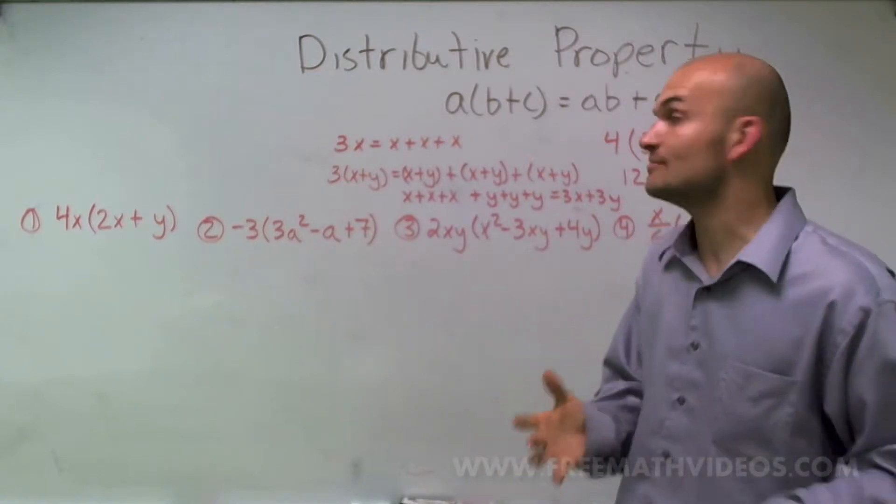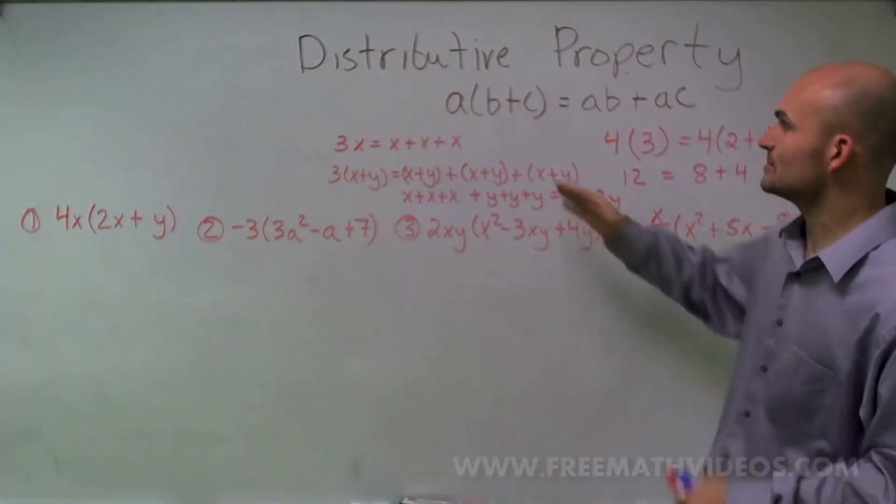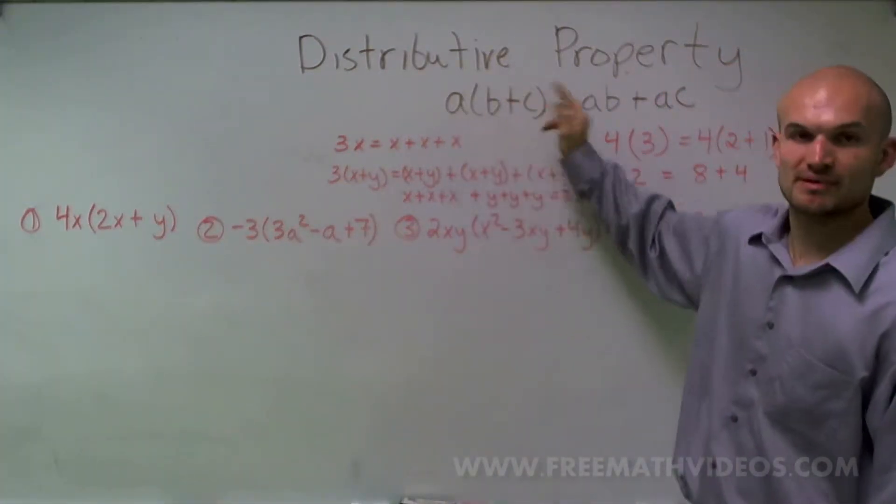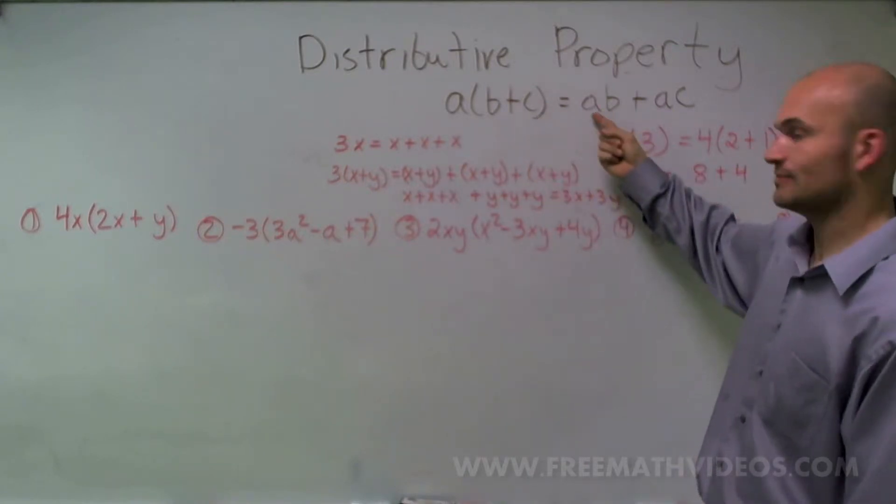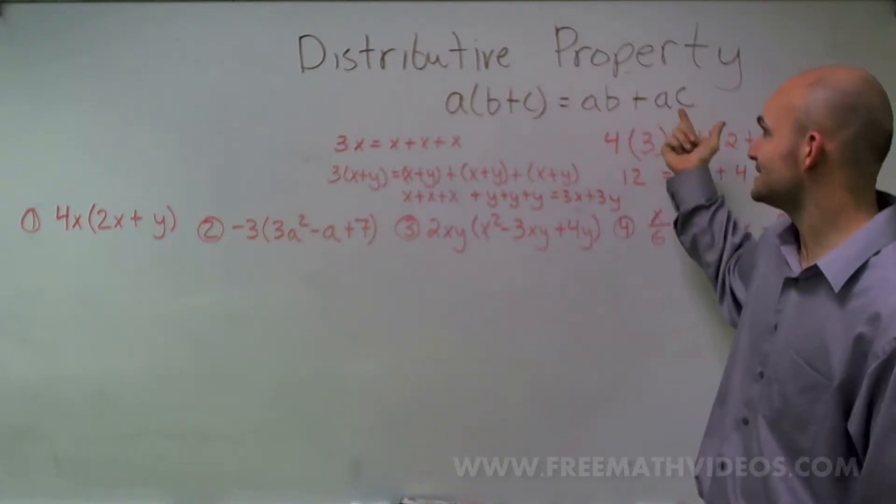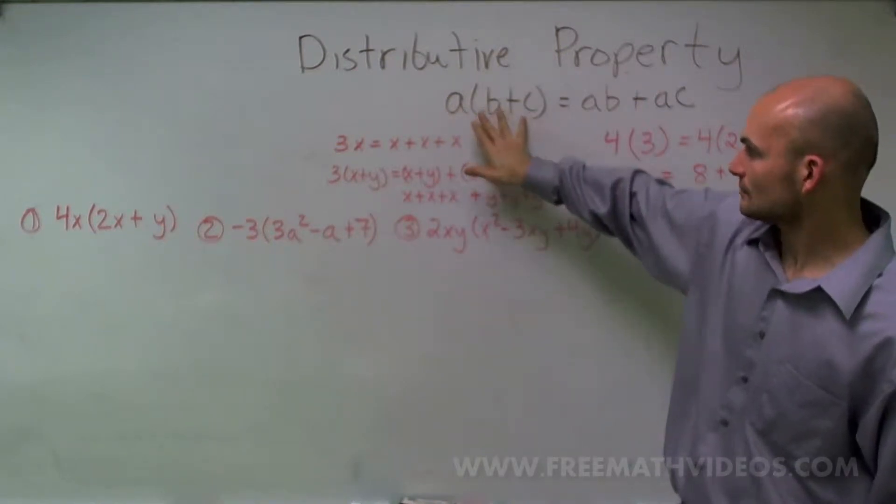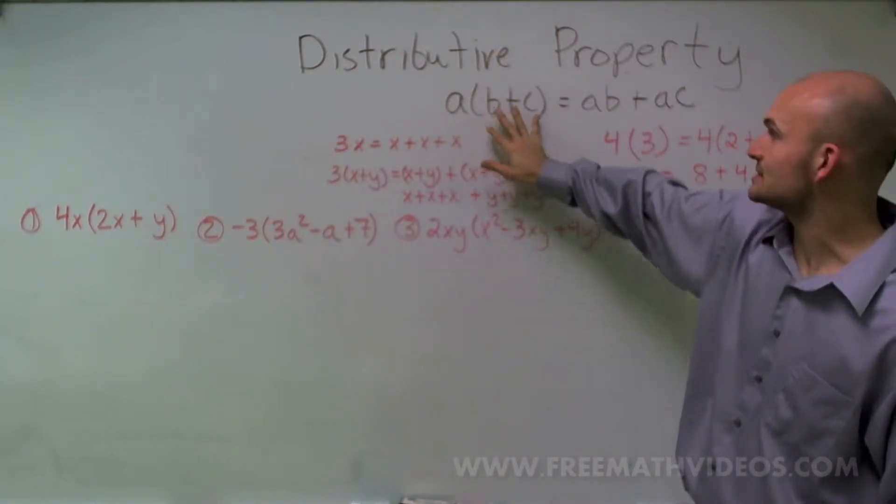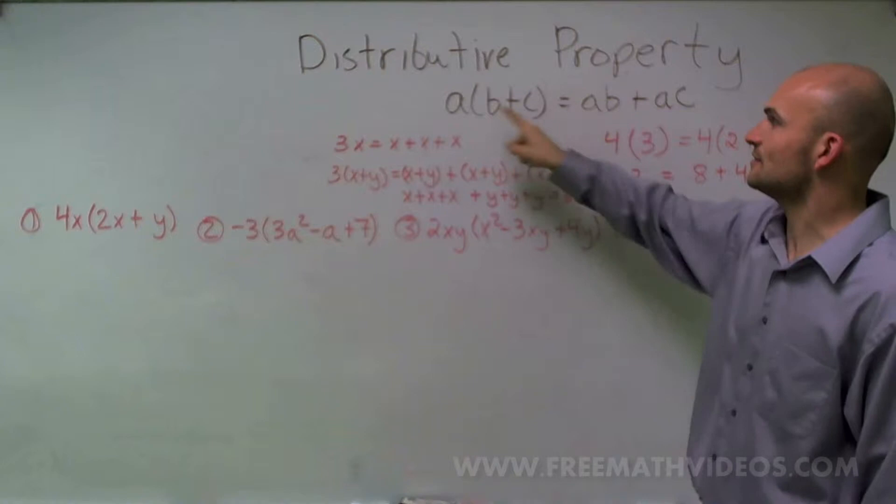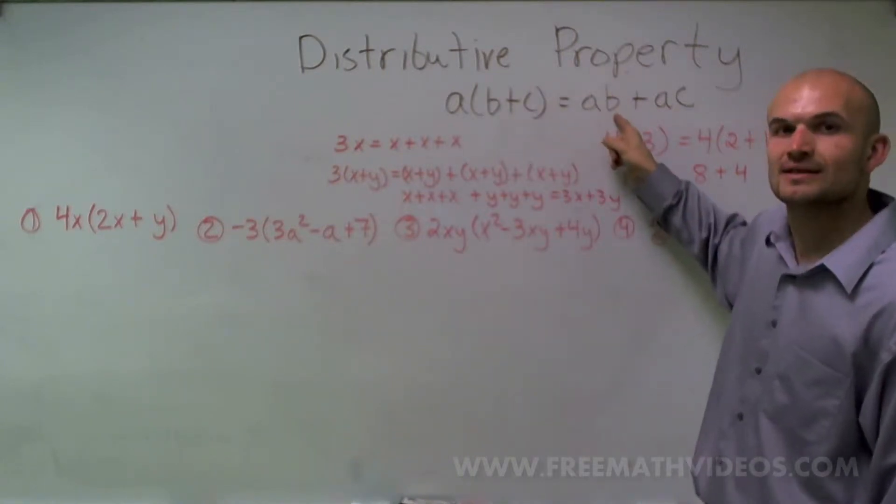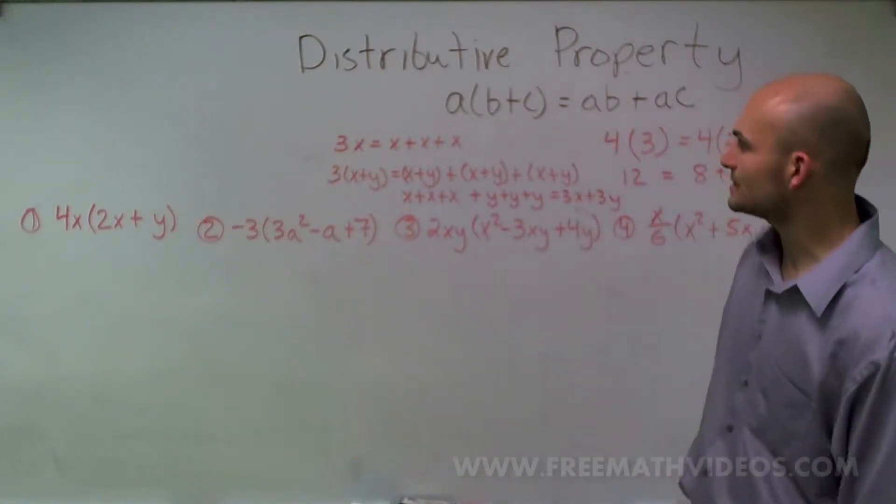Now, the distributive property can be very simply summed up as a times (b+c) is equivalent to ab plus ac, meaning a times anything inside parentheses is going to equal the product of that number a times the elements inside the parentheses.